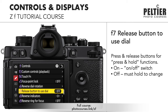F7, release button to use dial. Going back to our example of using the fn button for white balance, where you have to press and hold the fn button and then use the command dial — if you set this to on, you don't need to hold that button. You just press the front fn button, release it, and then use the command dials to change the white balance, then press that button again to go back into regular shooting mode. Because holding a button while rotating the command dials can be a difficult maneuver, if you have difficulty with that, turn this on.